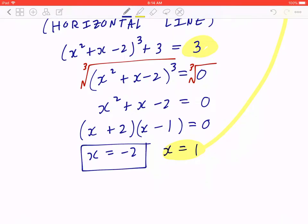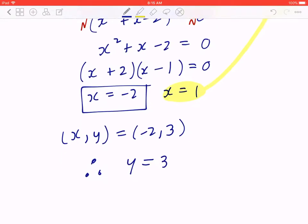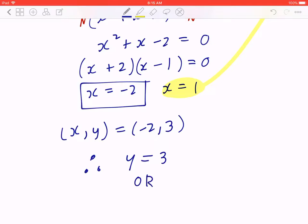So if you go back, what that means is the coordinate (-2, 3) is the second point that's also a tangent with a slope of 0. Now, of course, the equation of this line is going to be y = 3, or in standard form, y - 3 = 0.